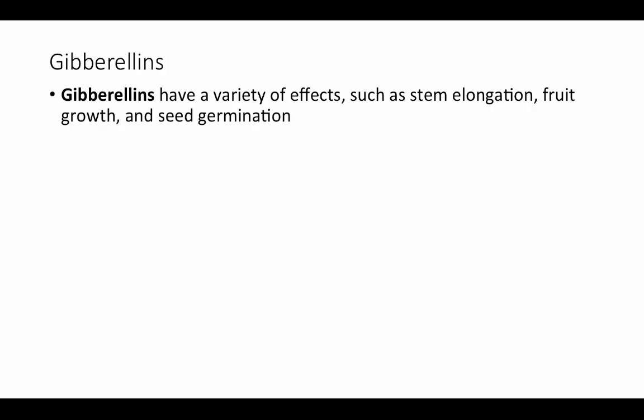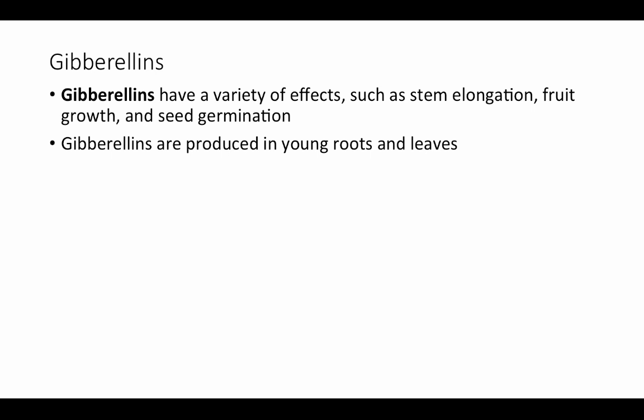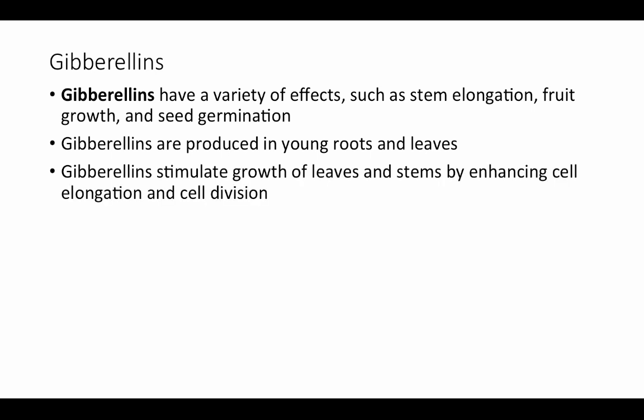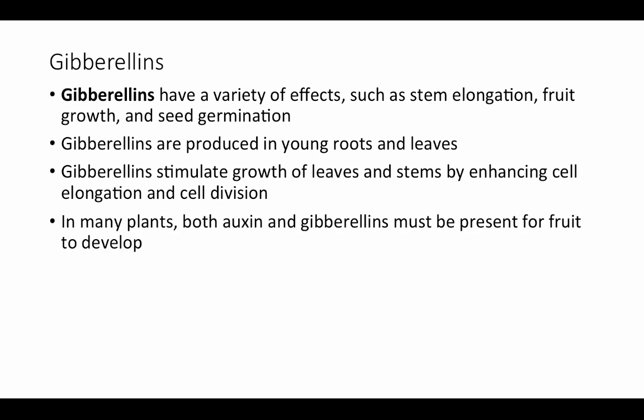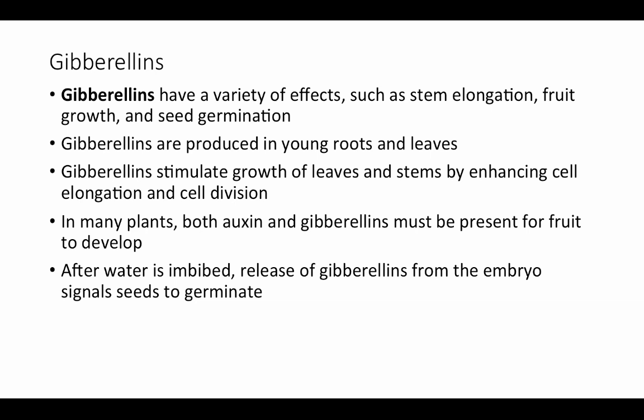Now let's look at gibberellins, which have a variety of effects such as stem elongation, fruit growth, and seed germination. Gibberellins are produced in young roots and leaves and stimulate growth of leaves and stems by enhancing cell elongation and cell division. In many plants, both auxin and gibberellins need to be present for fruits to develop. For seed germination, when the seed takes in water and is ready to grow, that water imbibition triggers the release of gibberellins from the embryo, which signals the seed to begin germinating.